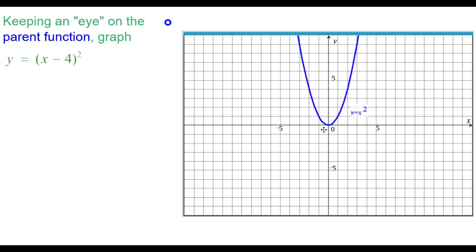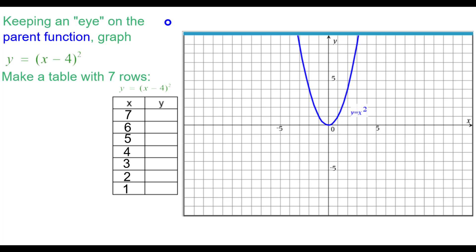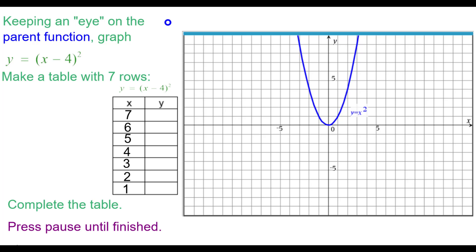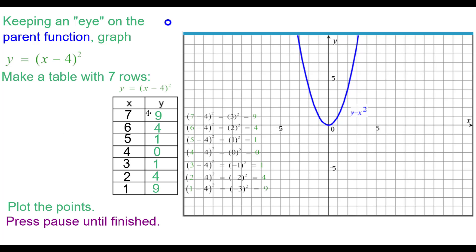Keeping an eye on this parent function, we're going to graph y equals the quantity of x minus 4, squared. We'll make a table with 7 rows using these values for x — it will make more sense soon why we chose those. Here are the values we got in the table and how we got them. Press pause to check those out if needed.